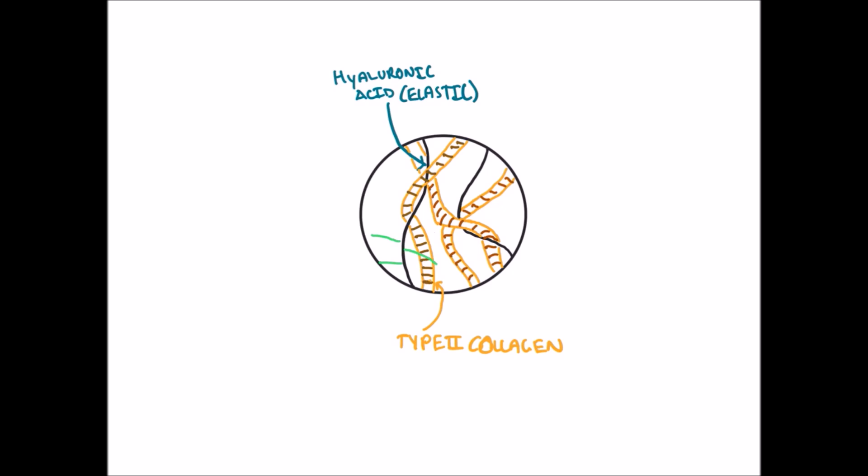Welcome to a quick podcast on cartilage histology and formation. Cartilage is a connective tissue consisting of a dense matrix of elastic fibers and collagen fibers embedded in a rubbery ground substance.